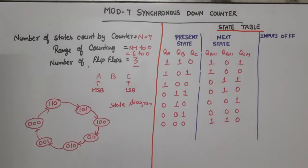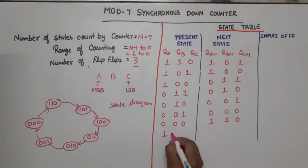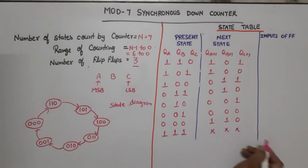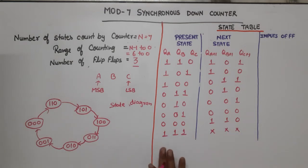There is one unused state — binary 1-1-1, which is 7. For the unused state, we treat it as a don't care. This completes our present state and next state columns.